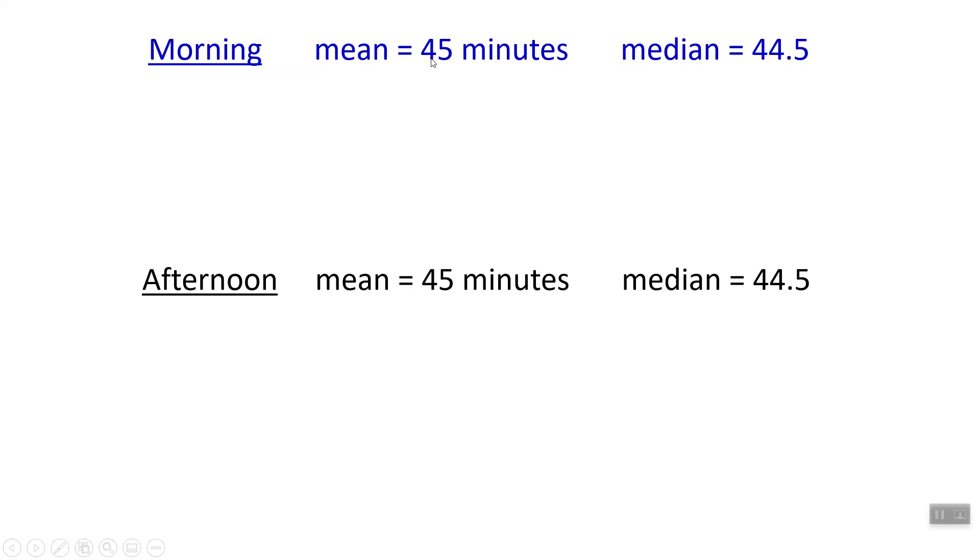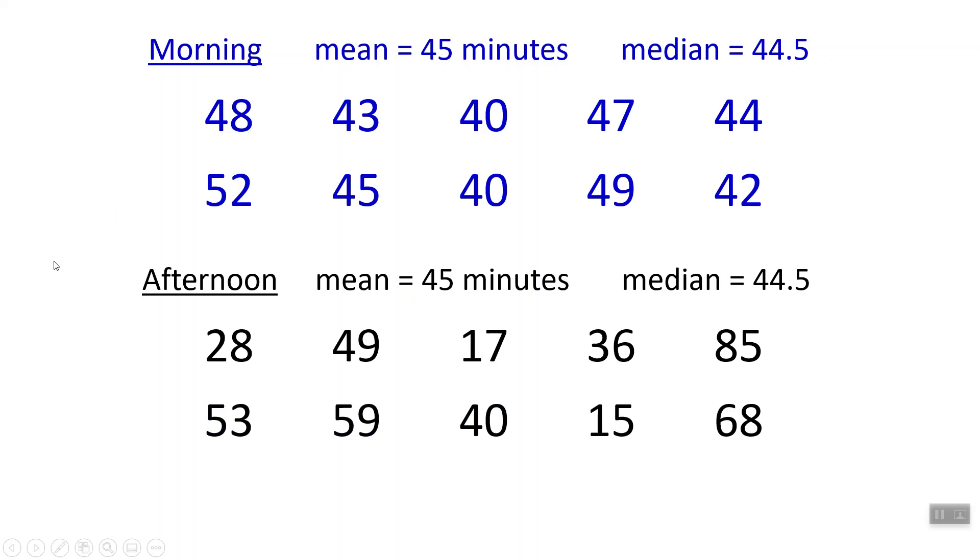Let's check on the data here. For the morning classes the mean was 45 minutes and the median was 44.5 minutes, so we might be slightly skewed towards the bigger numbers, but they're pretty close to each other. Afternoon classes have the same mean and median as the morning classes. But the morning numbers are mostly in the 40s except for this 52, and the afternoon classes are all over the place, from 15 to 85.